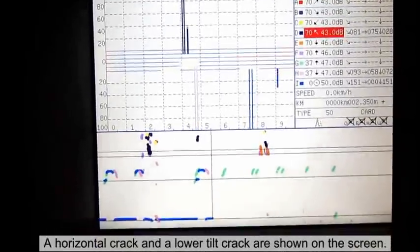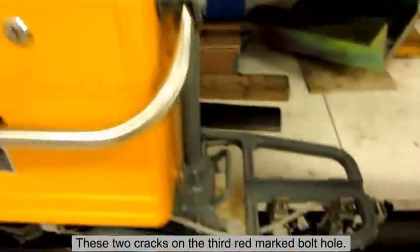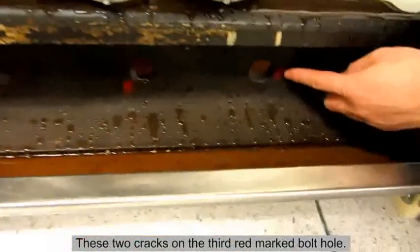A horizontal crack and a lower tilt crack are shown on the screen. These two cracks are on the third red marked bolt hole.